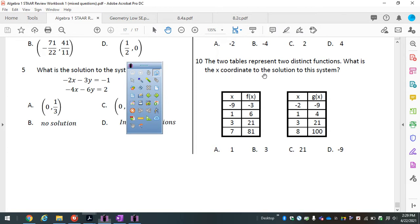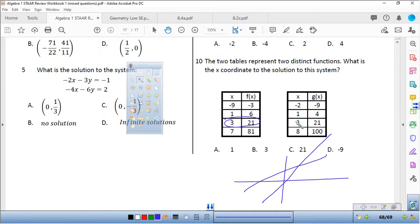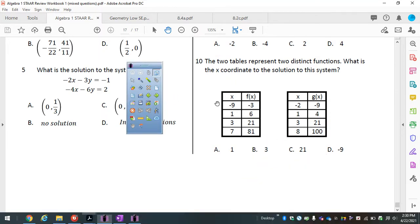Number 10 to table. What is the coordinate to the solution to this system? This is a line, this is another line. This one increases, this increases, positive slope increases. Another positive slope. But what I do know is they have the same right there. They both have 3 and 21, so what's the x-coordinate? Just 3.